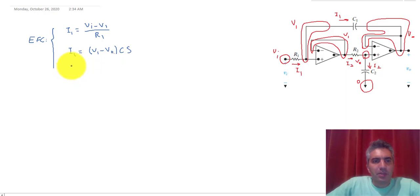Then for R2, we have I2 equal to V1 minus Vout divided by R2. And finally for the capacitor C2, we have I2 equal to Vout times C2s.